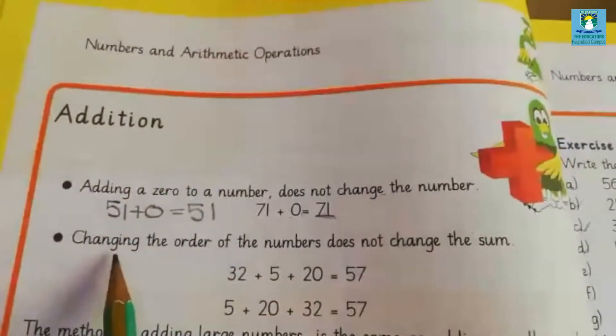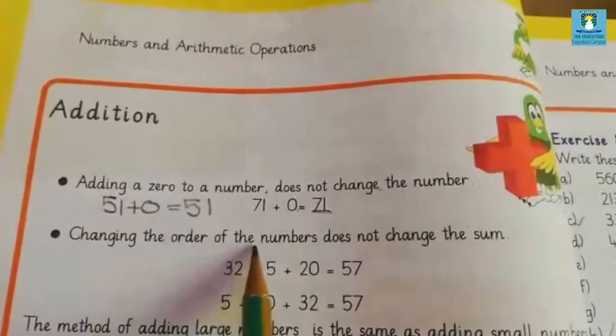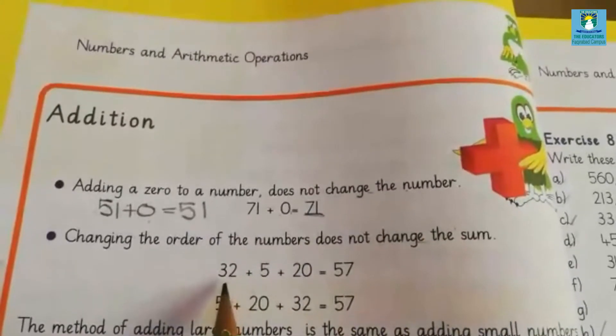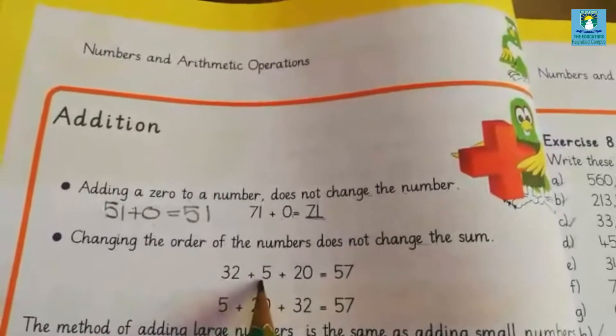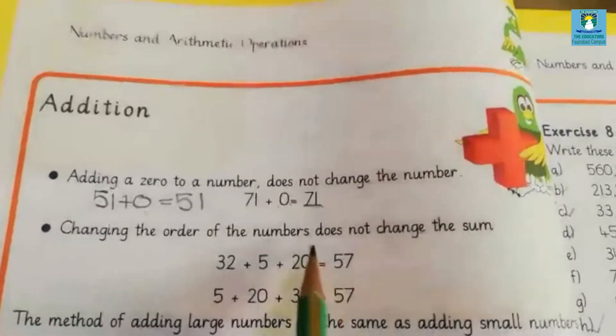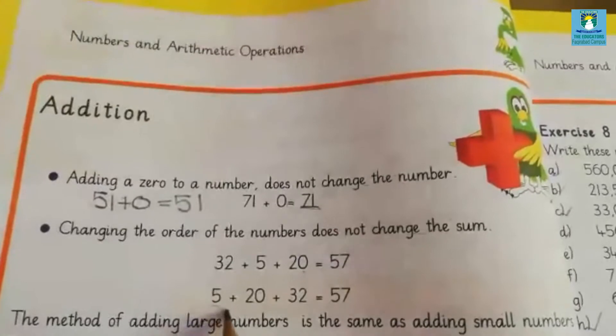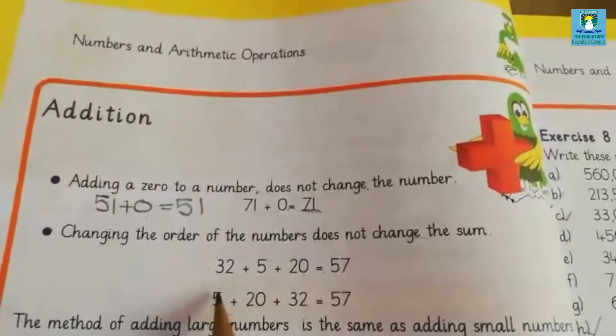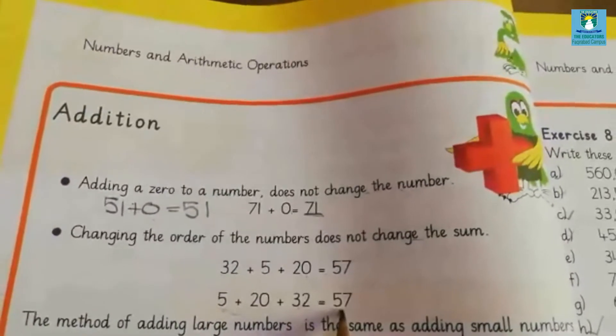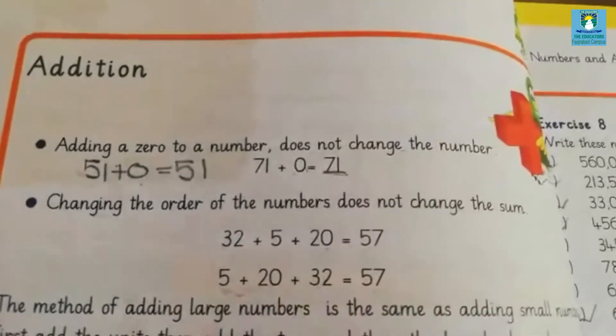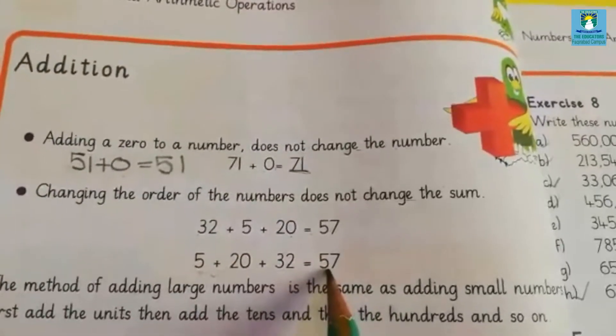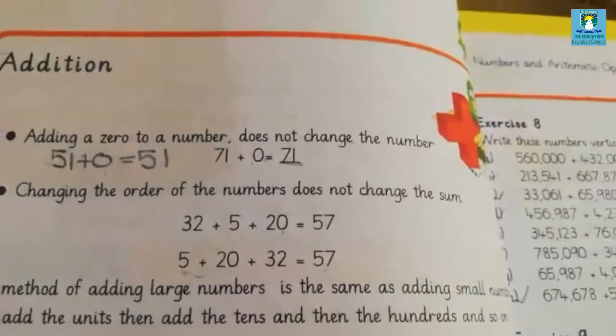Property number two is changing the order of the numbers doesn't change the sum. Look at here: 32 plus 5 plus 20, they are equal to 57. Now look at here, if I change the positions of numbers, there doesn't change the sum. Their sums are same. Now let's start exercise.